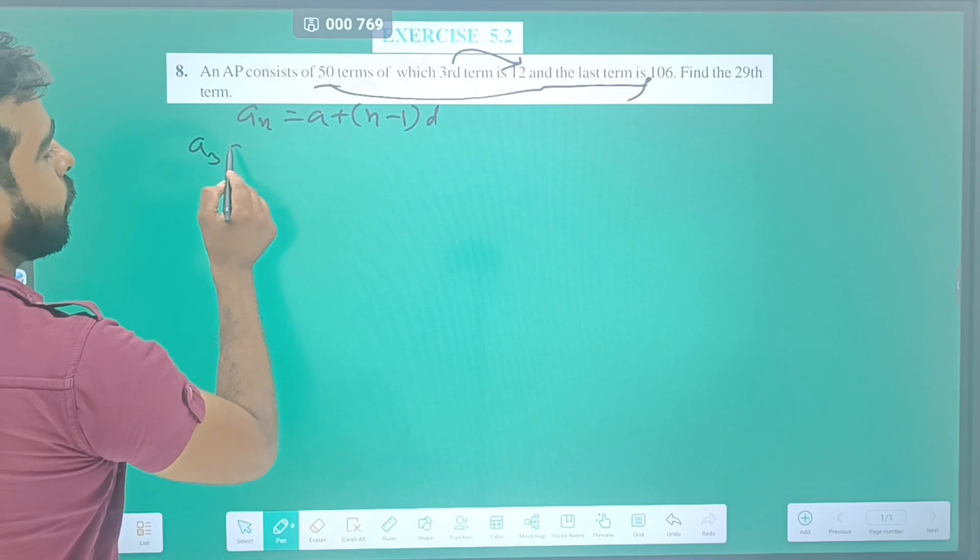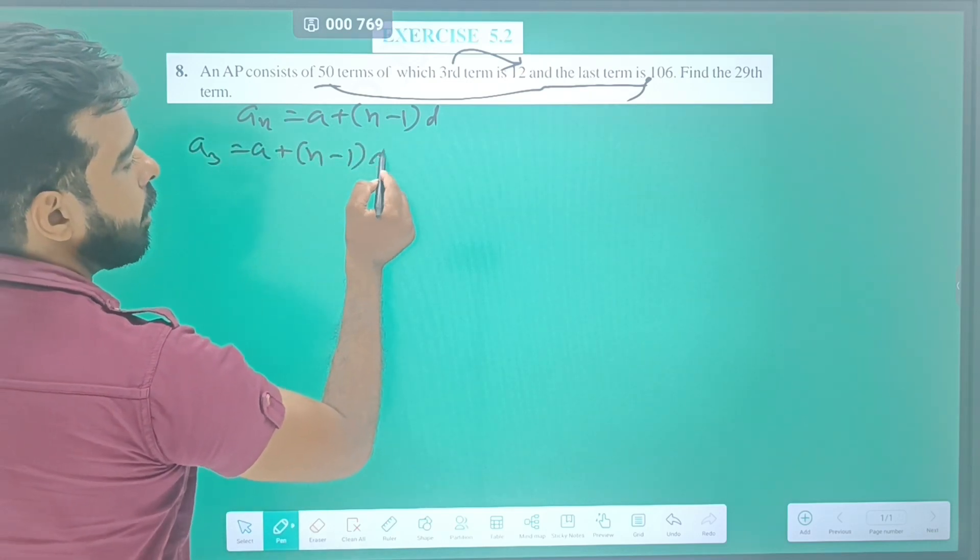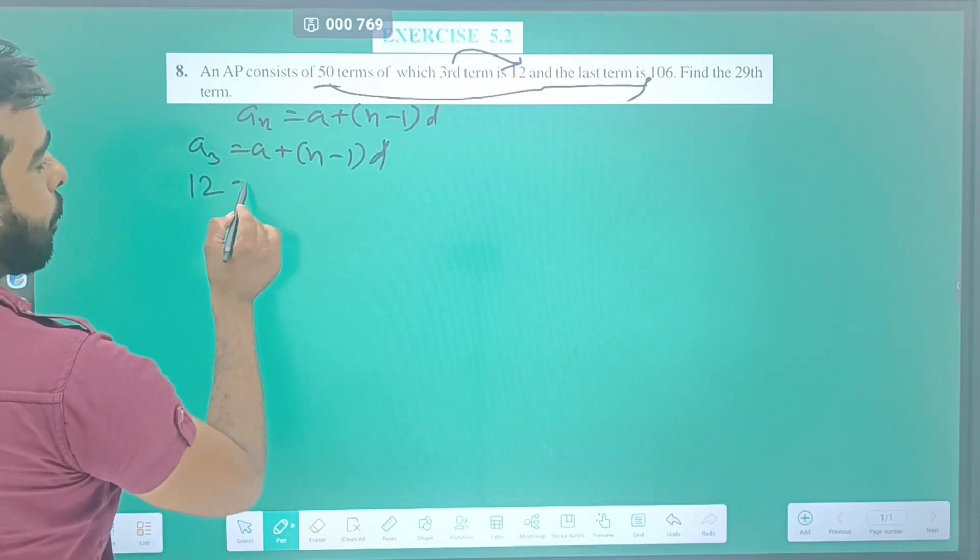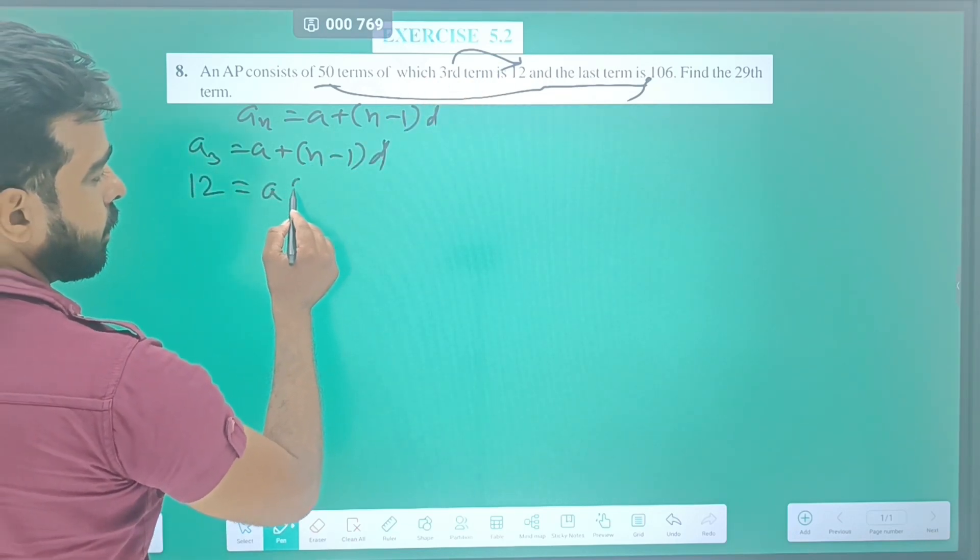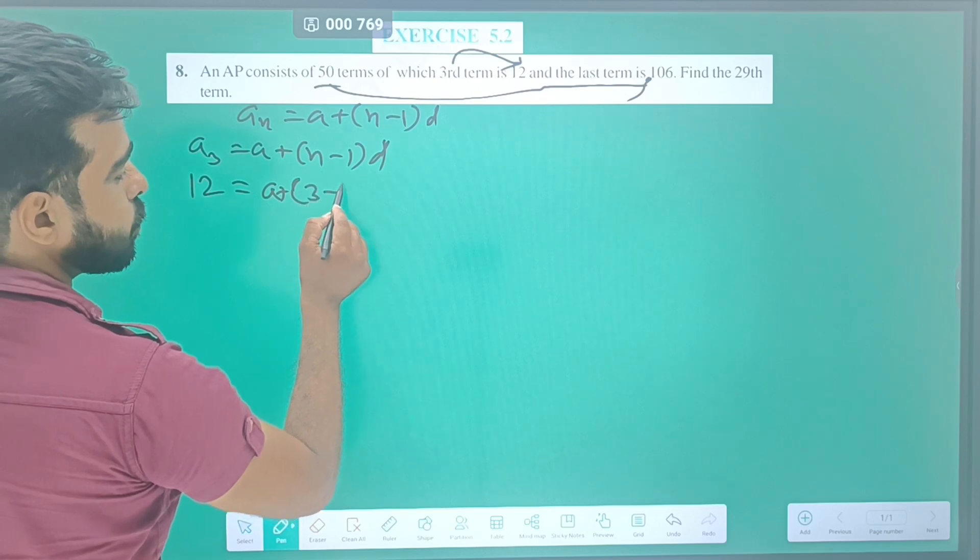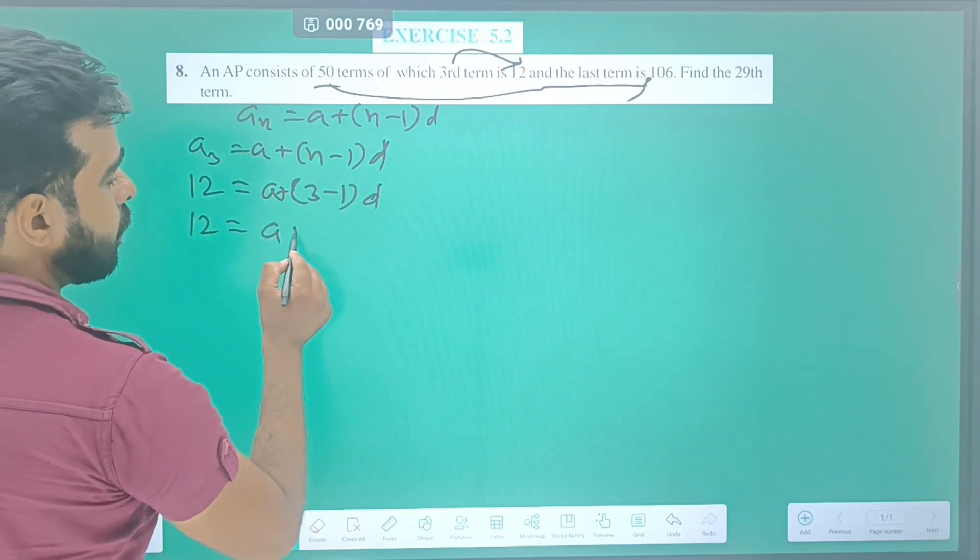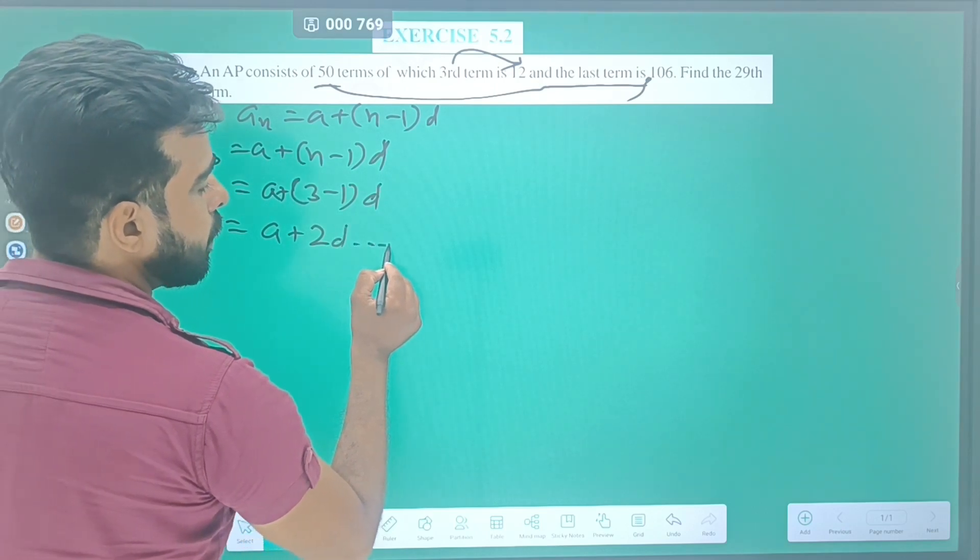For a_3: a_3 = a + (n-1)d. Where we get 12 = a + (3-1)d. So 12 = a + 2d. This is equation number 1.